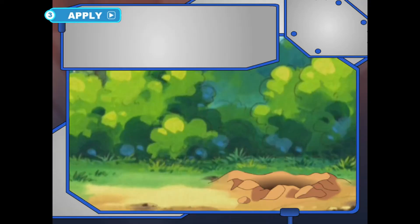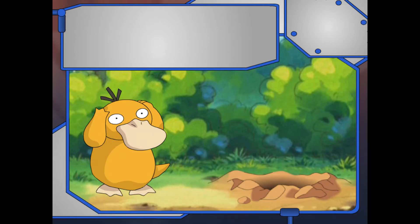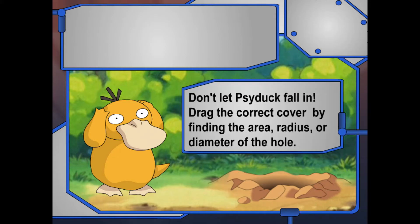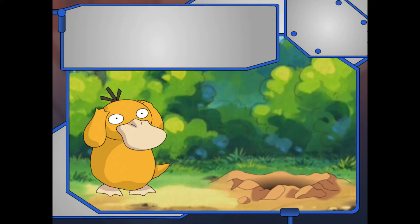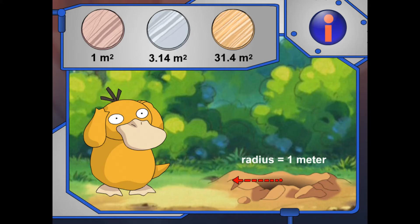You might need to use scratch paper or a calculator for this challenge. Psyduck needs help getting across this path. There are holes on the trail. Don't let Psyduck fall in! To fill in the hole, drag the correct circle to a hole by finding the area, radius, or diameter of the hole. Wrong circles just won't stay in place. Help Psyduck! Fill these holes with more circles!